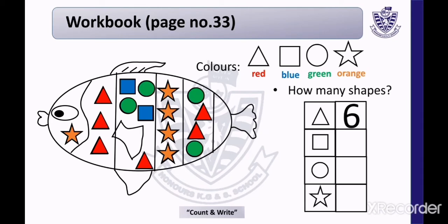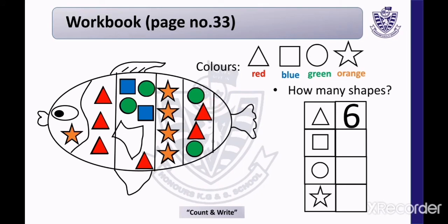Now tell me how many shapes are there. First, we will count the triangles. Count with me — how many triangles are there? 1, 2, 3, 4, 5, 6. There are 6 triangles. Now write 6 in the given block.